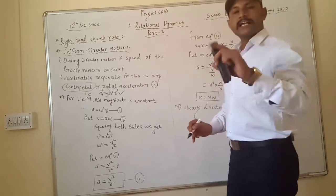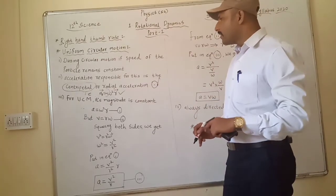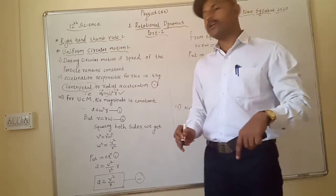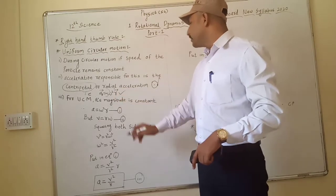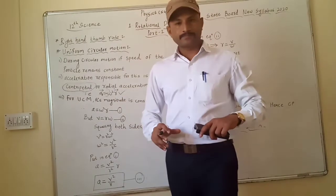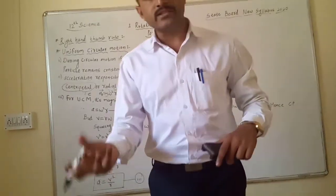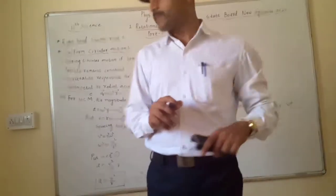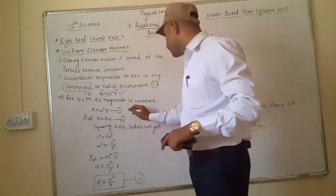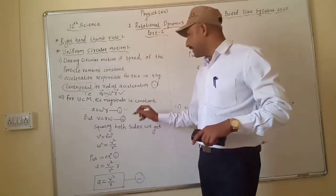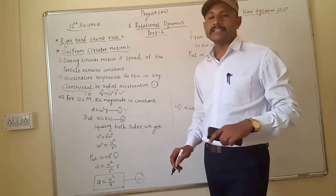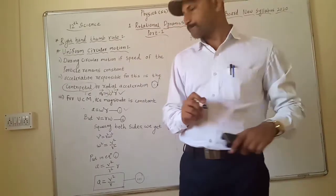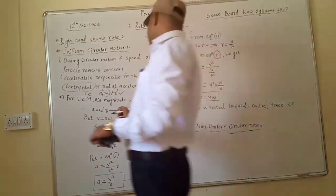Next, the second point: in uniform circular motion, the magnitude of acceleration is constant. When magnitude is constant, we always take the positive side. Hence we get the equation: A = ω²R. That is equation number one.